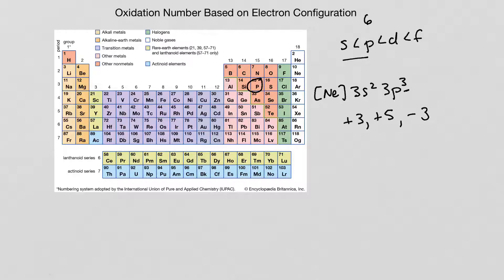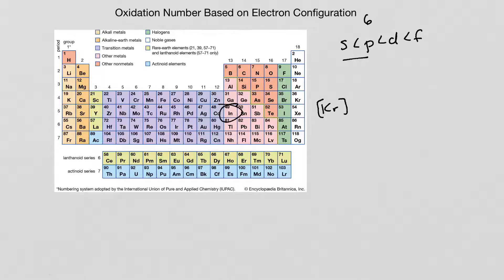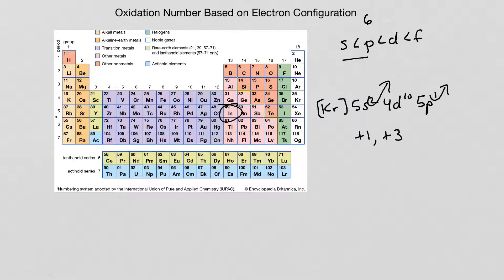One more — let's try indium, number 49. The noble gas before indium is krypton, so we write Kr in brackets. We go to the 5s with two electrons, then the D block is completely filled: 4d10. Then we're back to 5p1. The first oxidation number is plus 1 — that one electron gets taken away. The next two that we take away give us plus 3. Indium is a metal, so it can't have negative charges, and we won't take from the filled 4d10. So indium has two possible oxidation numbers: plus 1 and plus 3.